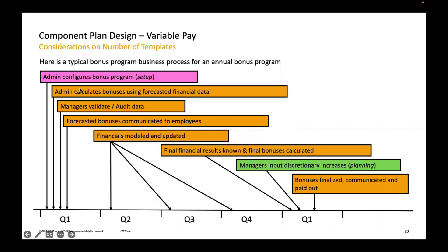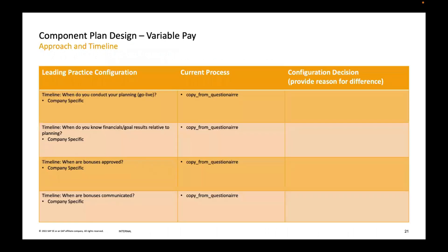Once the forecast is done, someone will validate and audit the data. The forecast bonus is then communicated to the employee. Then in Q2 — here they're talking about an annual plan — the financial model is updated when actual results become available. The actual results are uploaded into the system, and now we can see what was forecasted versus the actual, and accordingly the payment is made to the employee.